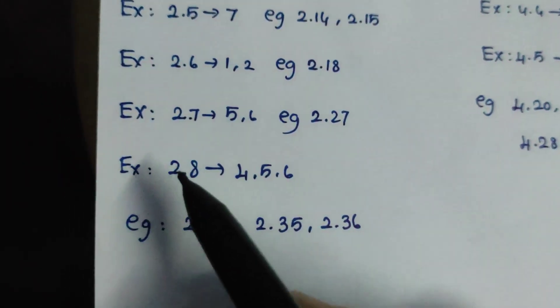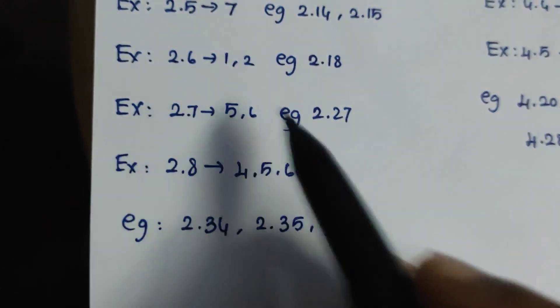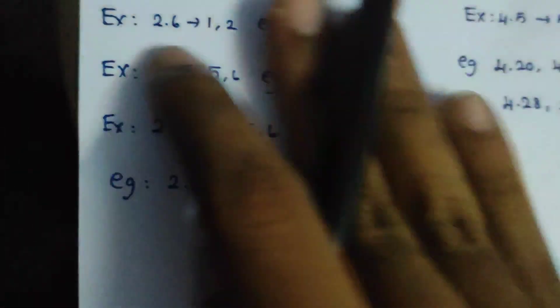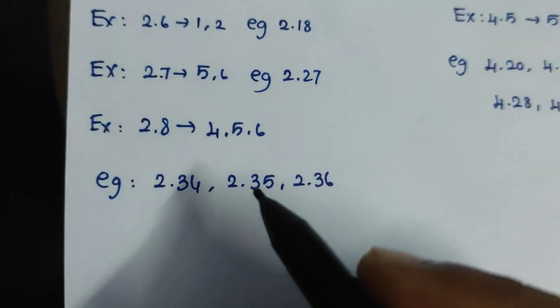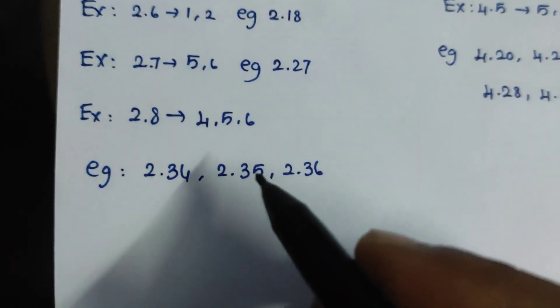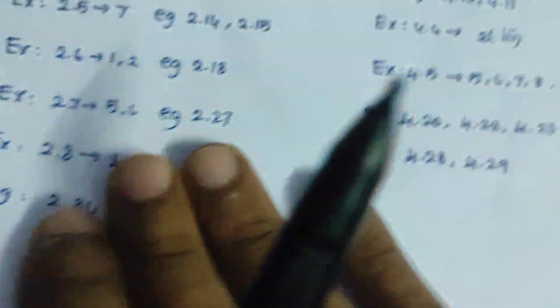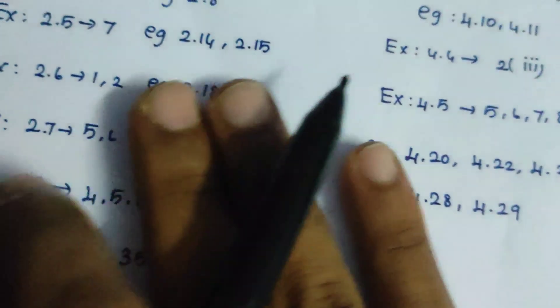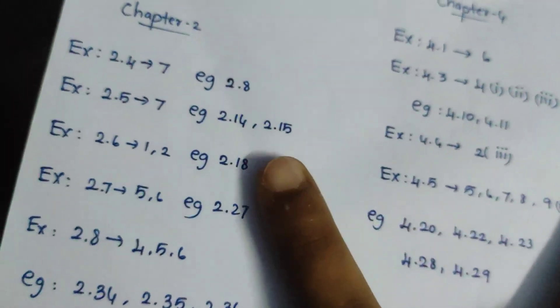Exercise 2.8 — 4, 5, 6. Now, Tamil Example 2.34, 35, 36. Exercise 2.8. 2.5, 2.8.